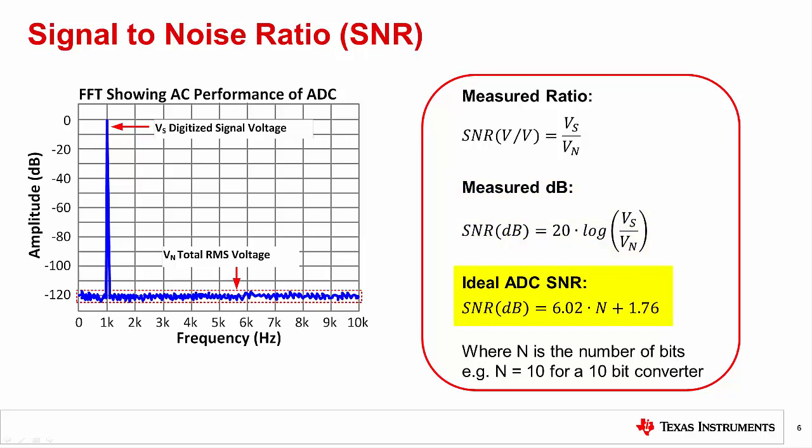The ideal signal-to-noise ratio in decibels can be calculated by taking 6.02 times n plus 1.76, where n is the number of bits. A 10-bit converter, for example, would have 6.02 times 10 plus 1.76, or 61.96 dB SNR. This relationship was derived by integrating the quantization noise and applying the signal-to-noise relationship.